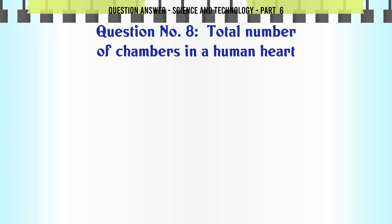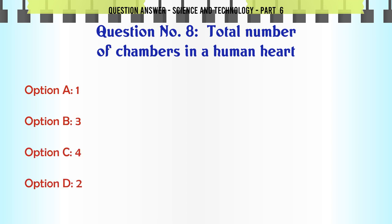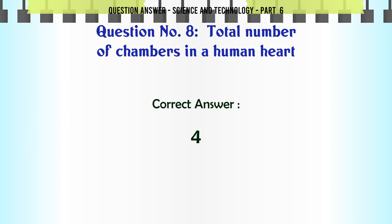Total number of chambers in a human heart. A. 1. B. 3. C. 4. D. 2. The correct answer is 4.